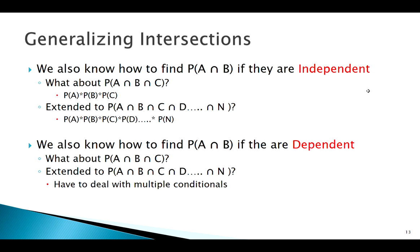So we've got a couple of different rules — addition and multiplication — and a couple of different types of relationships — independence and mutually exclusive. We need to know how to apply those rules across all of those situations, and when we have multiple independent or mutually exclusive events. Thanks for tuning in, and we'll see you next time.